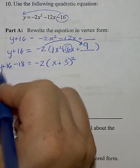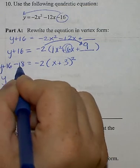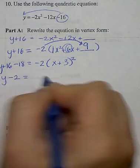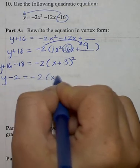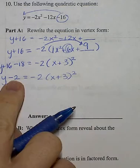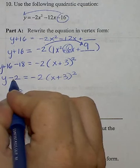When I combine like terms, positive 16 and negative 18 is negative 2. Now move the negative 2 to the opposite side, and I can do that by adding 2.